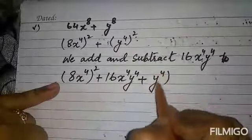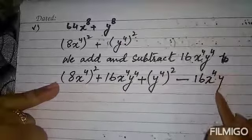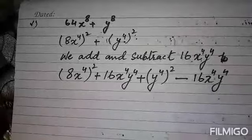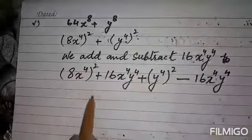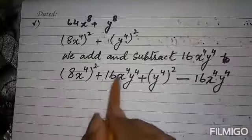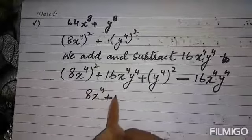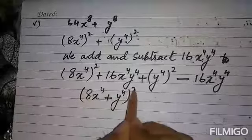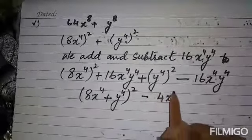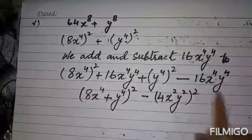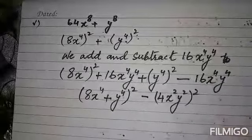We also subtract 16x⁴y⁴ so that the value of the question doesn't change. The first three terms form a whole square in the form a² + 2ab + b², giving (8x⁴ + y⁴)², minus 16x⁴y⁴, which is the square of 4x²y². Now both parts are in squared form.